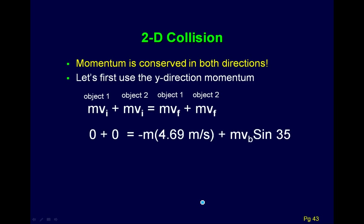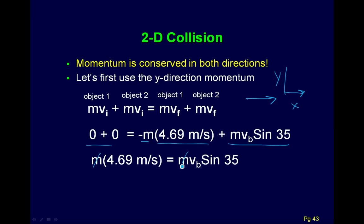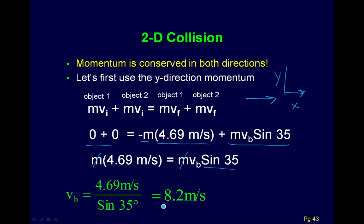Let's start with the y-direction momentum. In the y-direction, neither puck is moving initially, so y-momentum is zero. Afterwards: negative M × 4.69 plus M × VB sin 35° equals zero. Since the two pucks are identical, the masses are the same and cancel out. Solving: VB sin 35° = 4.69, giving VB equals 8.2 meters per second.